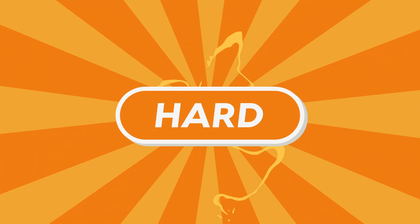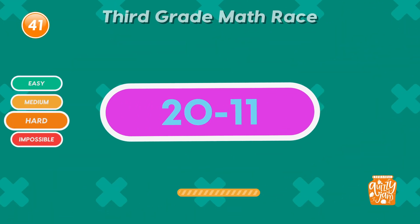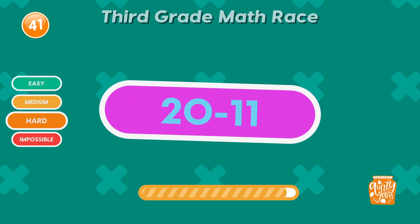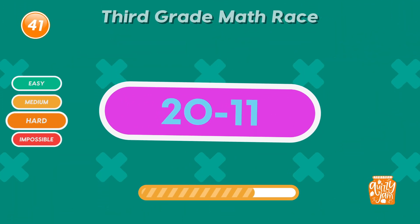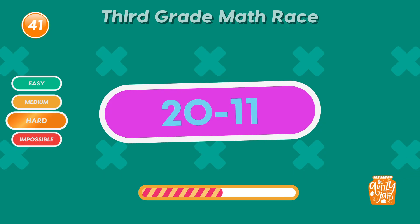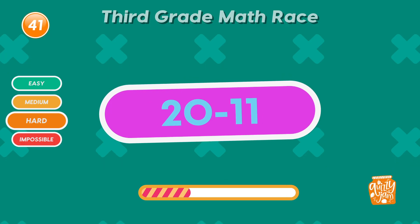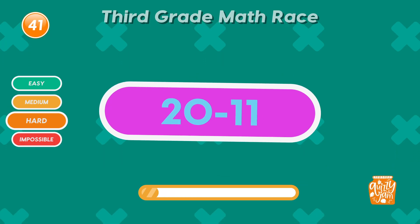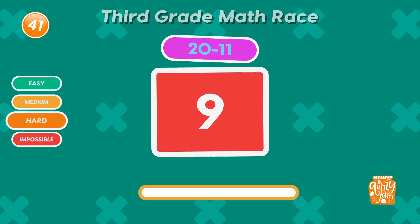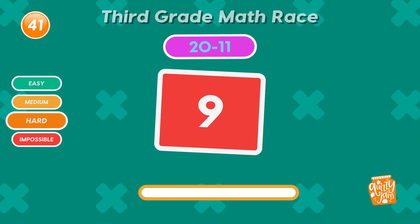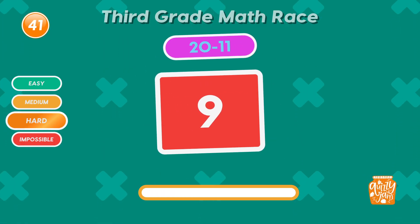Only the math masters survive here! Third graders fear this level! What is 20 minus 11? 9! You're still in the zone!